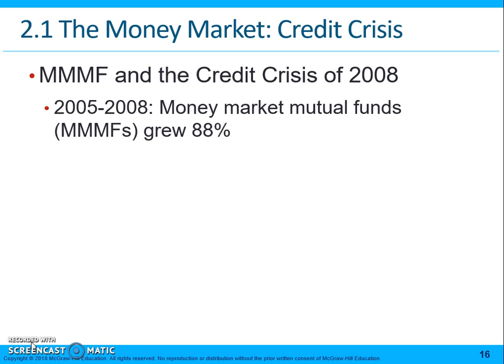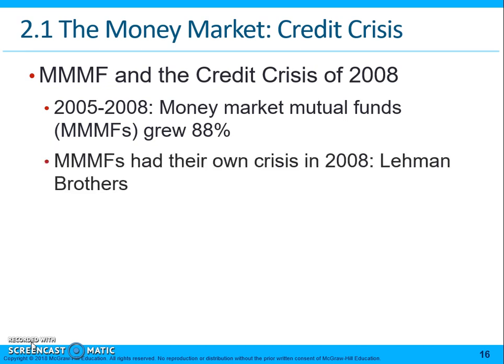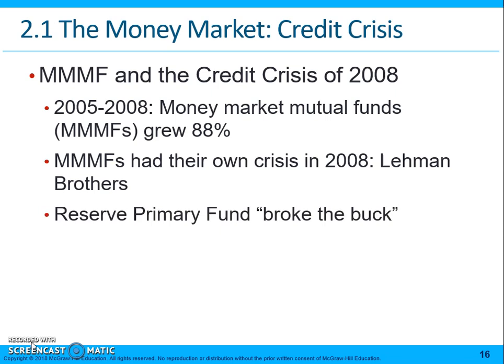Prior to 2008, there was a large amount of growth in money market mutual funds — they grew 88% between 2005 and 2008. There was a crisis related to Lehman Brothers in 2008: Lehman Brothers' primary reserve fund broke the buck, meaning that the value of that fund fell below a dollar.